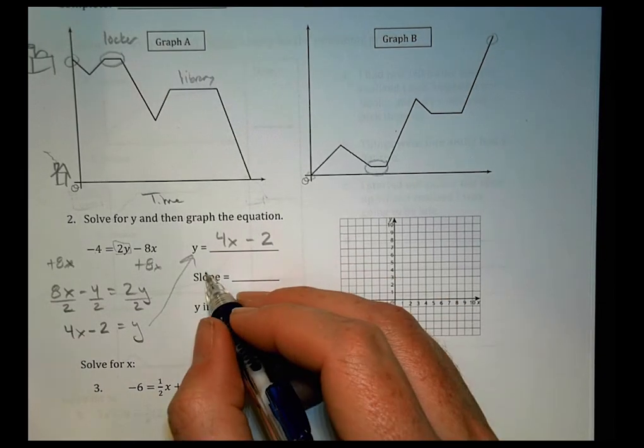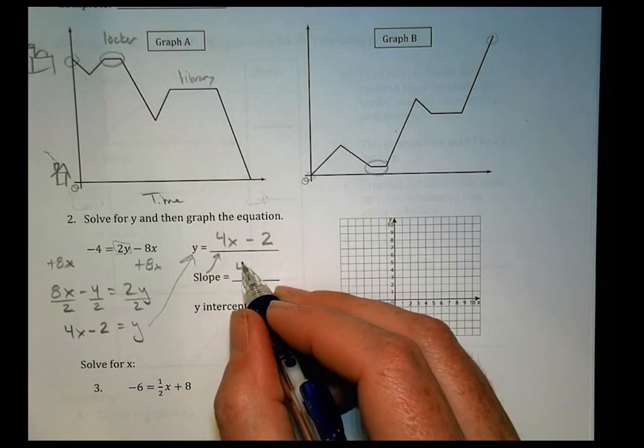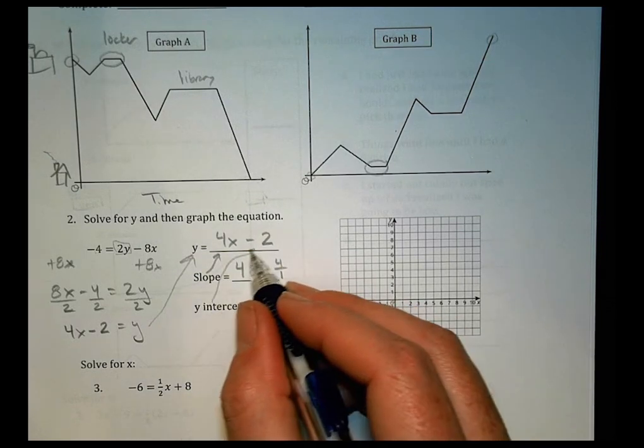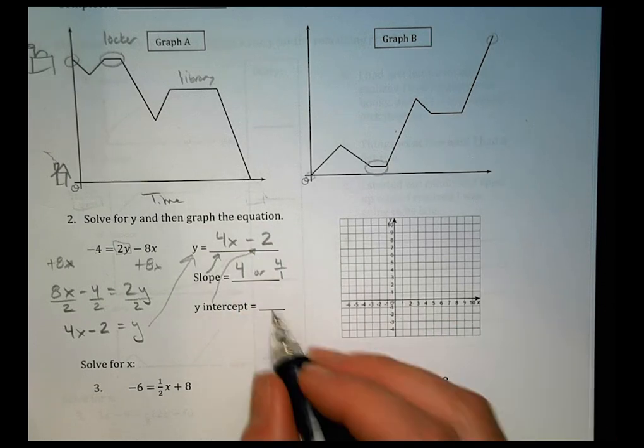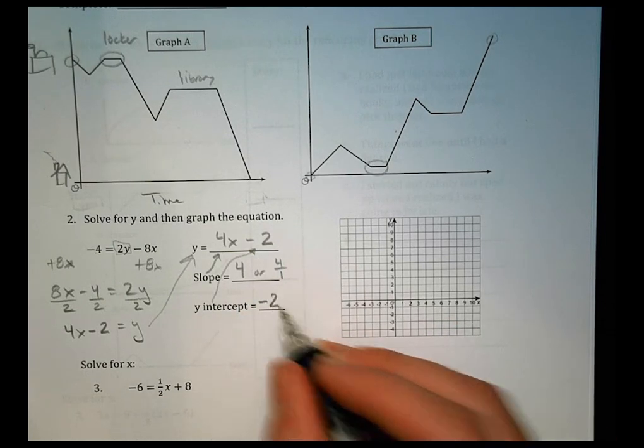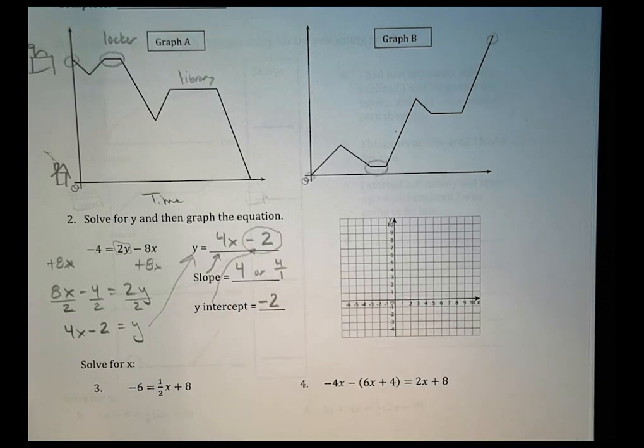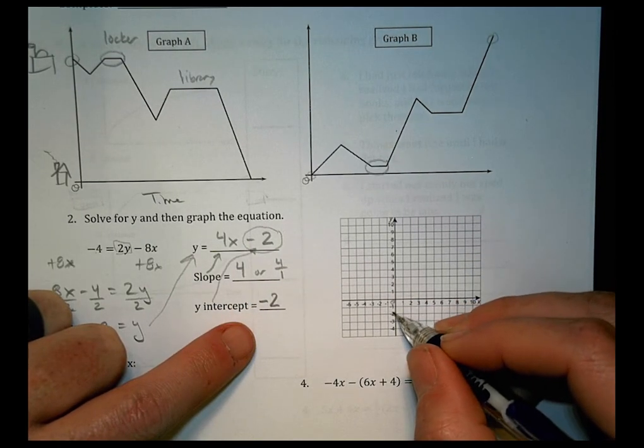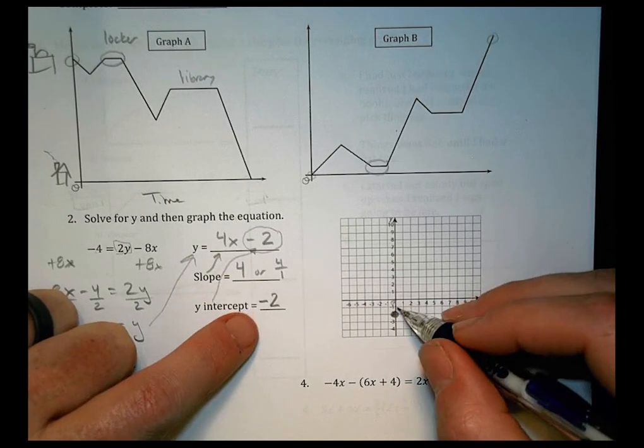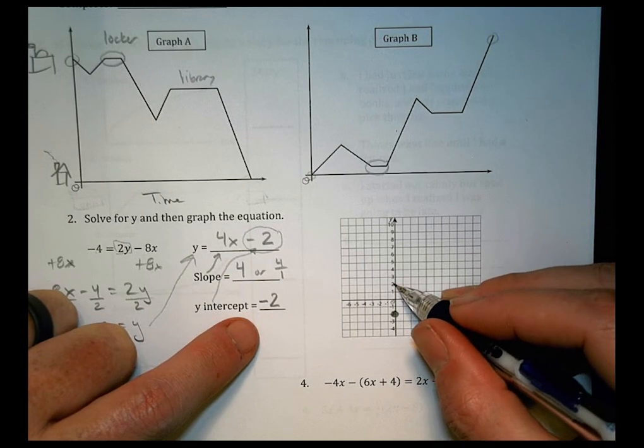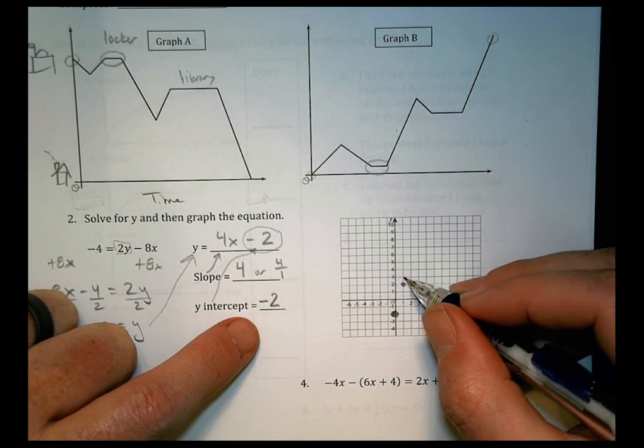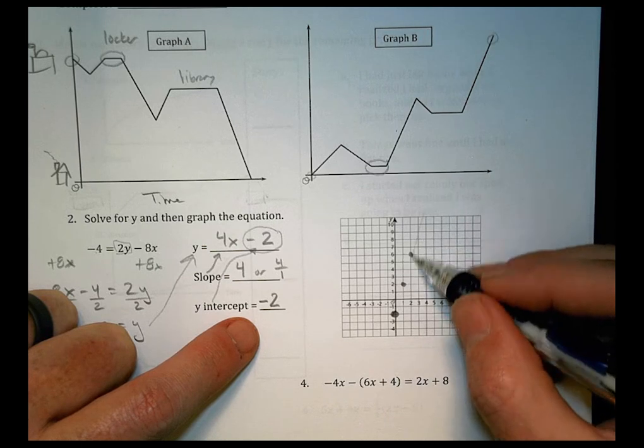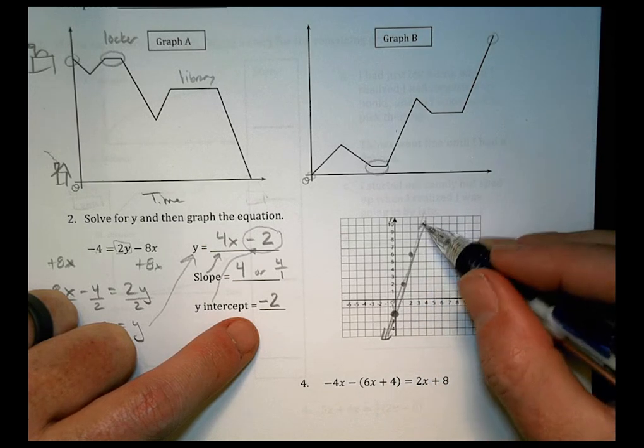And just like last time, our slope is a number in front. You would say 4 or we could say 4 over 1. And our Y intercept is the value there. It's not 2. It's negative 2. Keep that in mind. It's the whole bit right there. So knowing this, we could plot our first point at 0, negative 2. And then we could use our slope to go up 1, 2, 3, 4 and over 1. Do it again. 1, 2, 3, 4 and over 1. And then we could play connect the dots and have ourselves a nice graph.